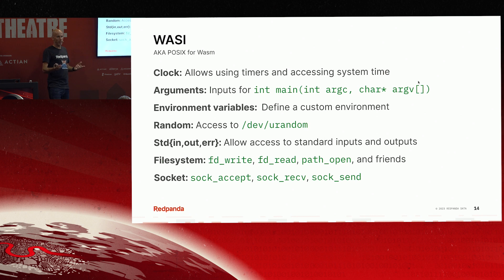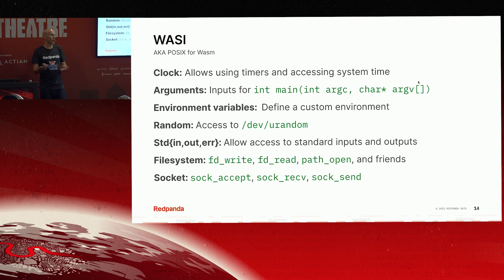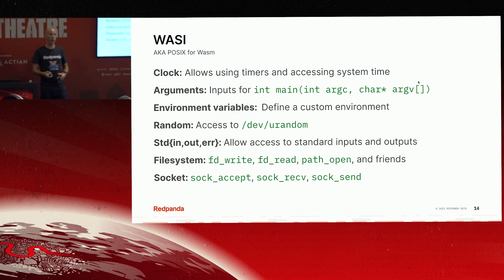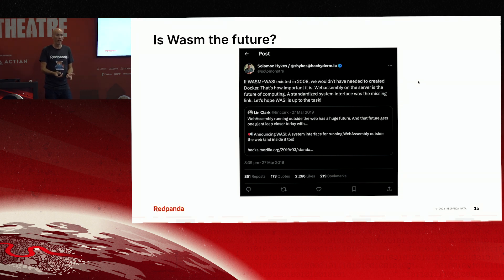WASI — or WASI depending on where you come from — is basically POSIX for WebAssembly. It gives you an operating environment within which to run your code, providing things like clocks, random, file system, network, and all the good things you need when running in a container. This is the latest iteration of WebAssembly, and its power is such that the people who wrote Docker back in 2008 said that if WASM and WASI had existed then, they wouldn't have bothered writing Docker. That is how seriously the industry is taking WebAssembly.